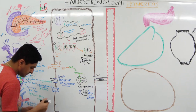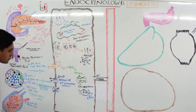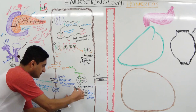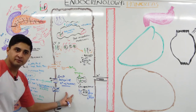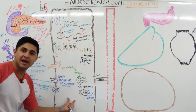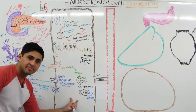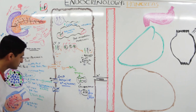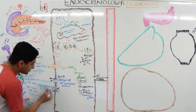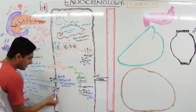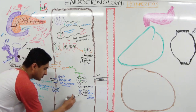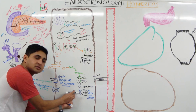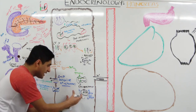When high ATP levels cause the ATP-sensitive potassium channels to close, potassium can no longer leave. The cell loses its hyperpolarized state and starts to depolarize — becoming more positive and more active.